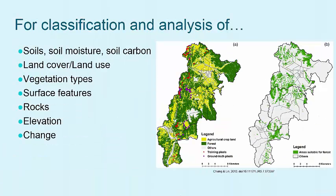Remotely sensed imagery is used for classification and analysis of a variety of features. Many different fields and industries use remotely sensed imagery, and there are many examples of the types of research undertaken using remote sensing. Here, I list a few related to the physical and earth sciences. One common use shown here is the classification of land cover to identify specific areas, such as those suitable for forest cover.